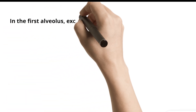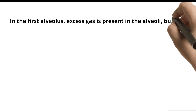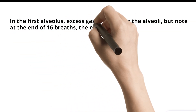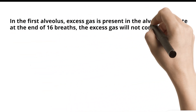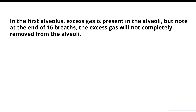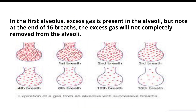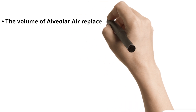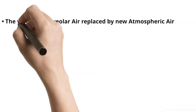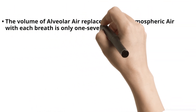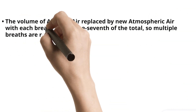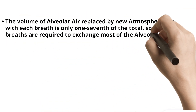In the first alveolus, excess gas is present in the alveoli, but note that at the end of 16 breaths, the excess gas will not be completely removed from the alveoli. The volume of alveolar air replaced by new atmospheric air with each breath is only one-seventh of the total, so multiple breaths are required to exchange most of the alveolar air.